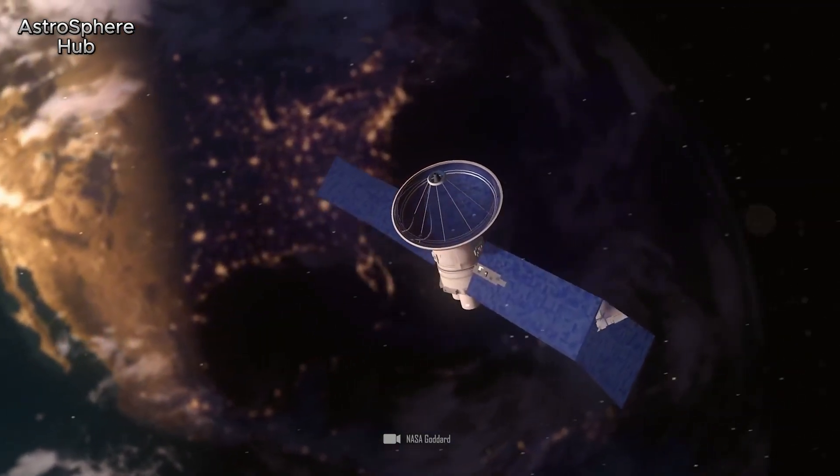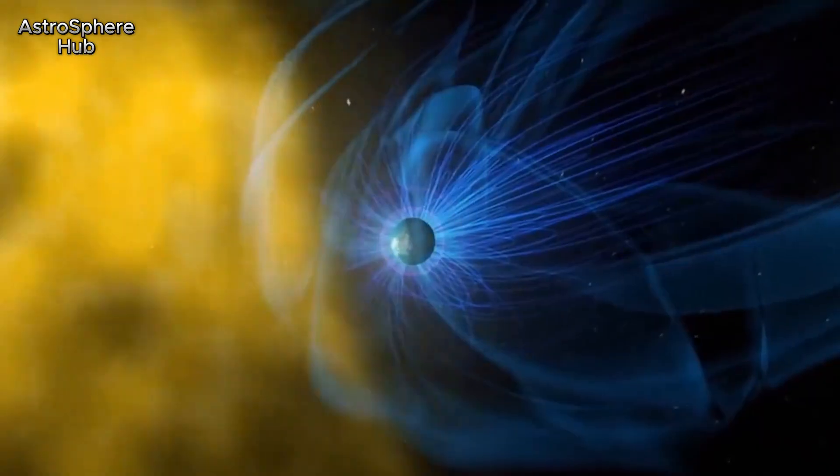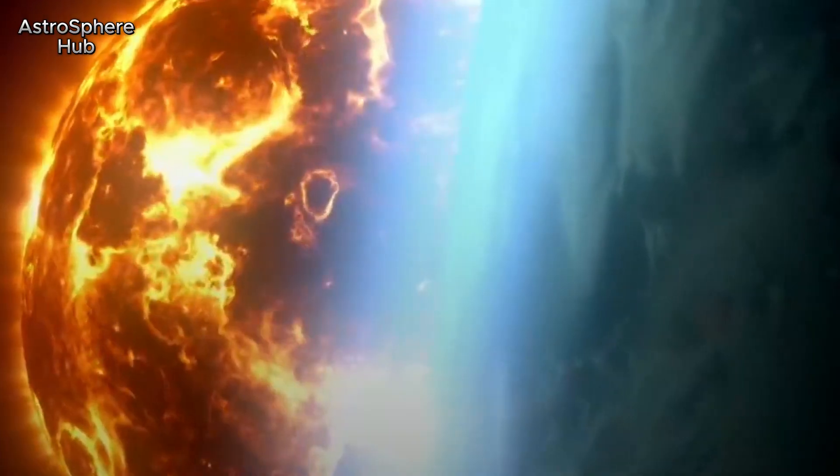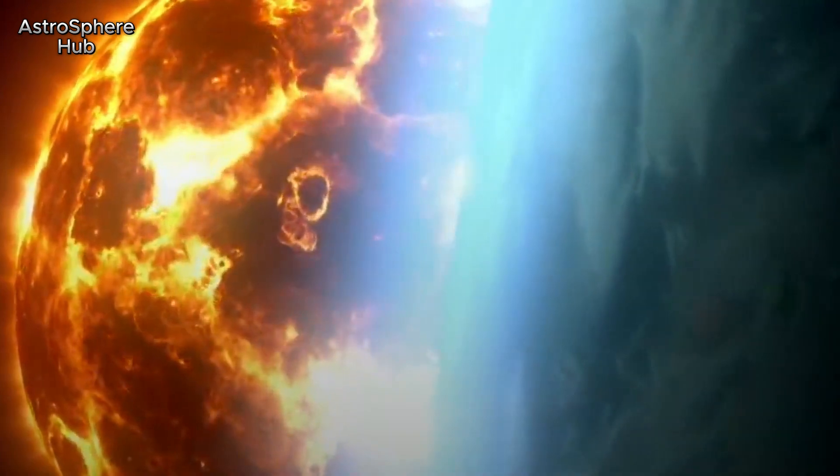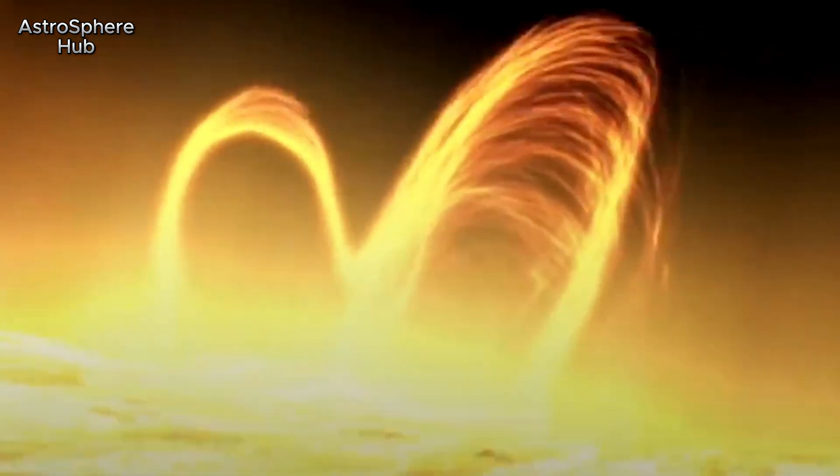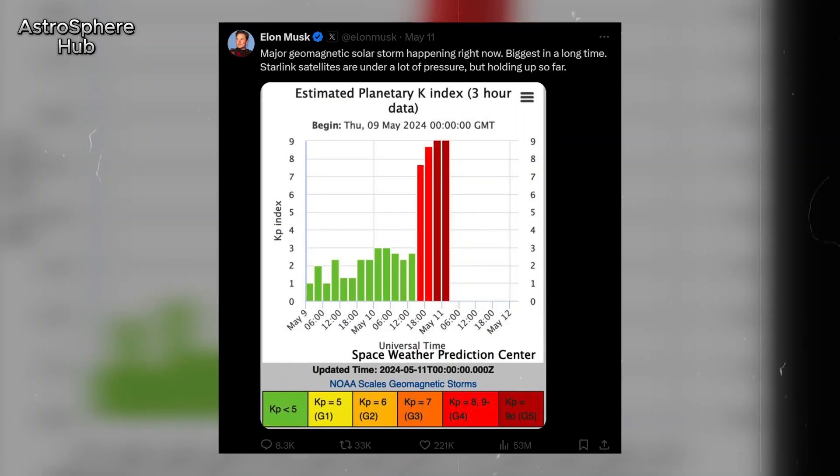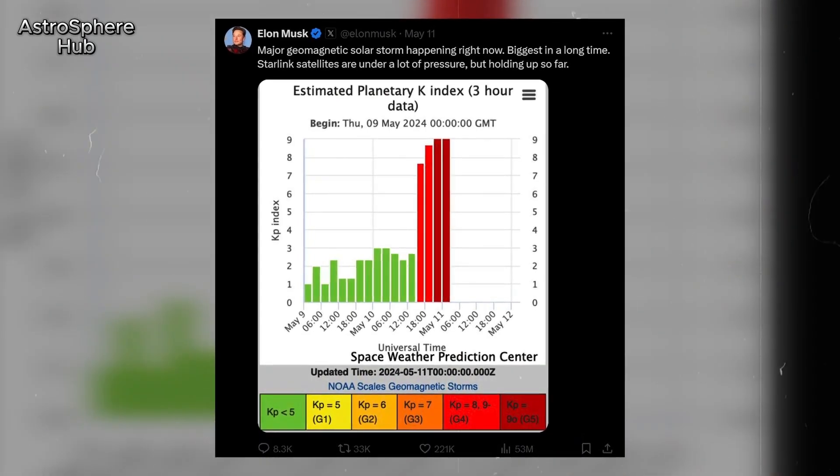These geomagnetic storms could have had a severe impact on Earth and humanity. At any time, a solar storm can suddenly paralyze satellite-based communication and navigation systems and plunge our civilization into chaos.